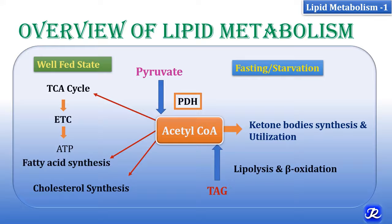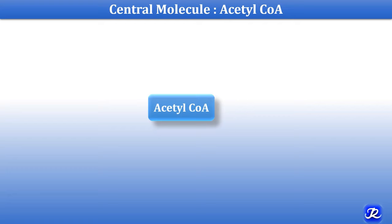Acetyl-CoA is the central molecule of lipid metabolism. It is derived from pyruvate by the action of enzyme pyruvate dehydrogenase, and pyruvate is the end product of glycolysis. Acetyl-CoA can also be derived from the carbon skeleton of some amino acids.